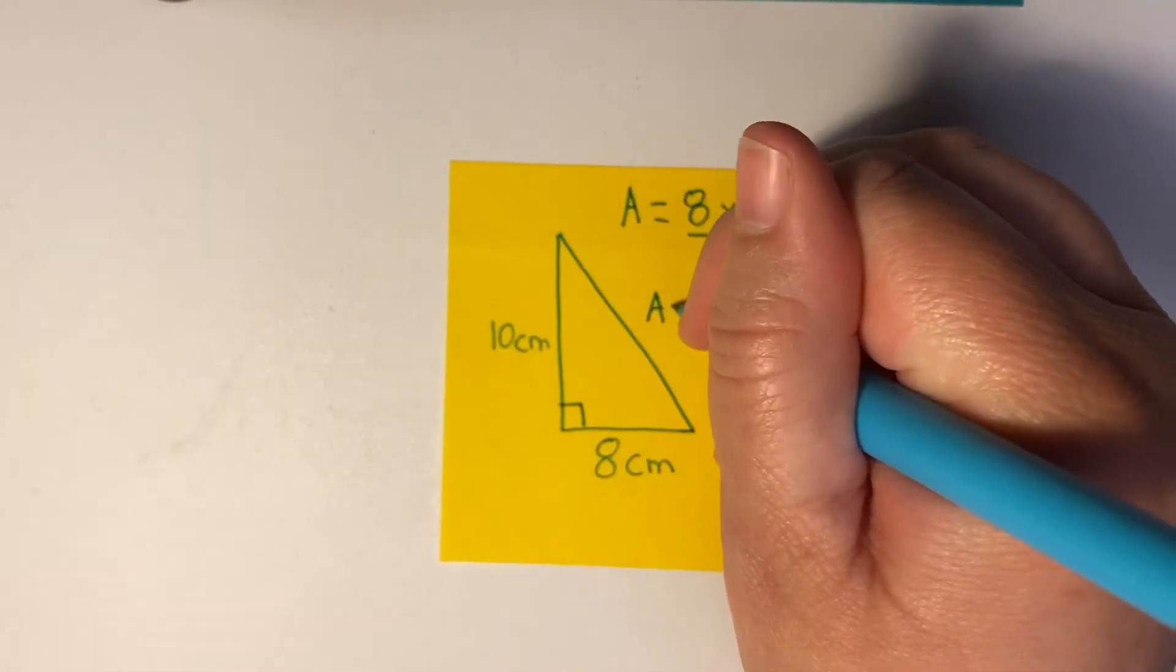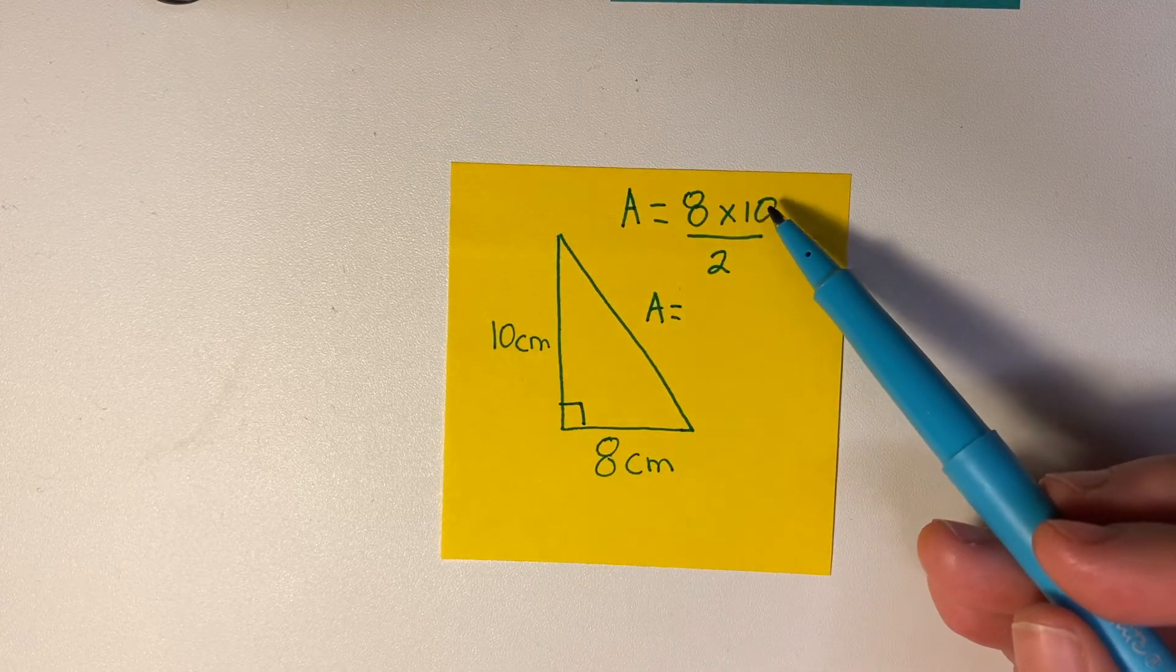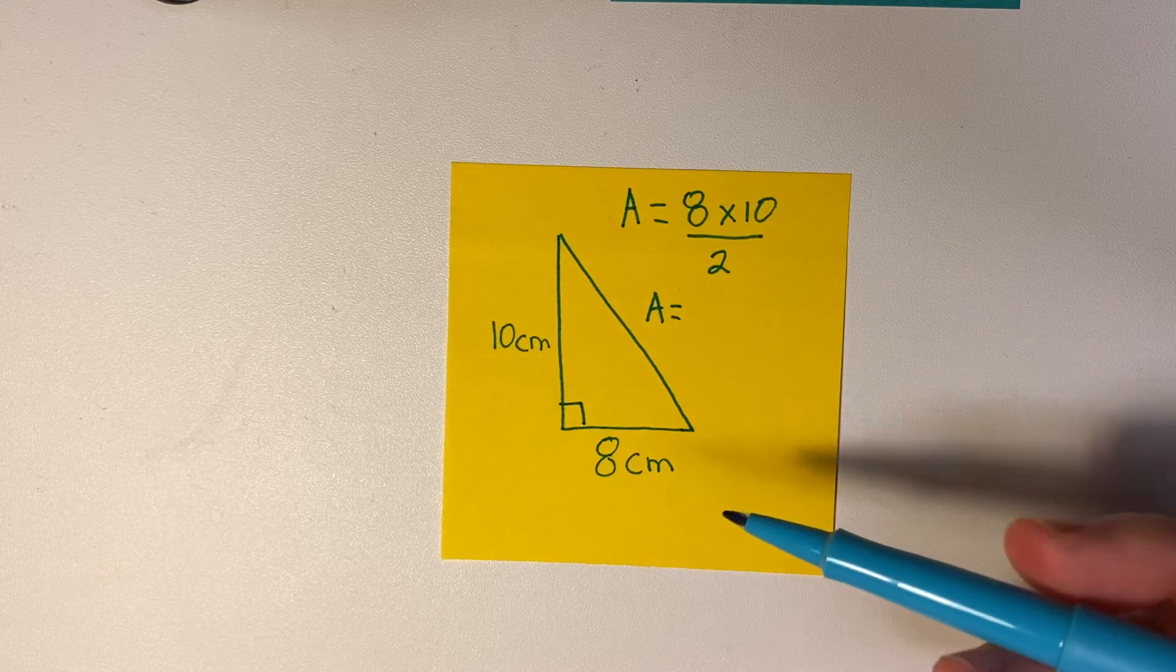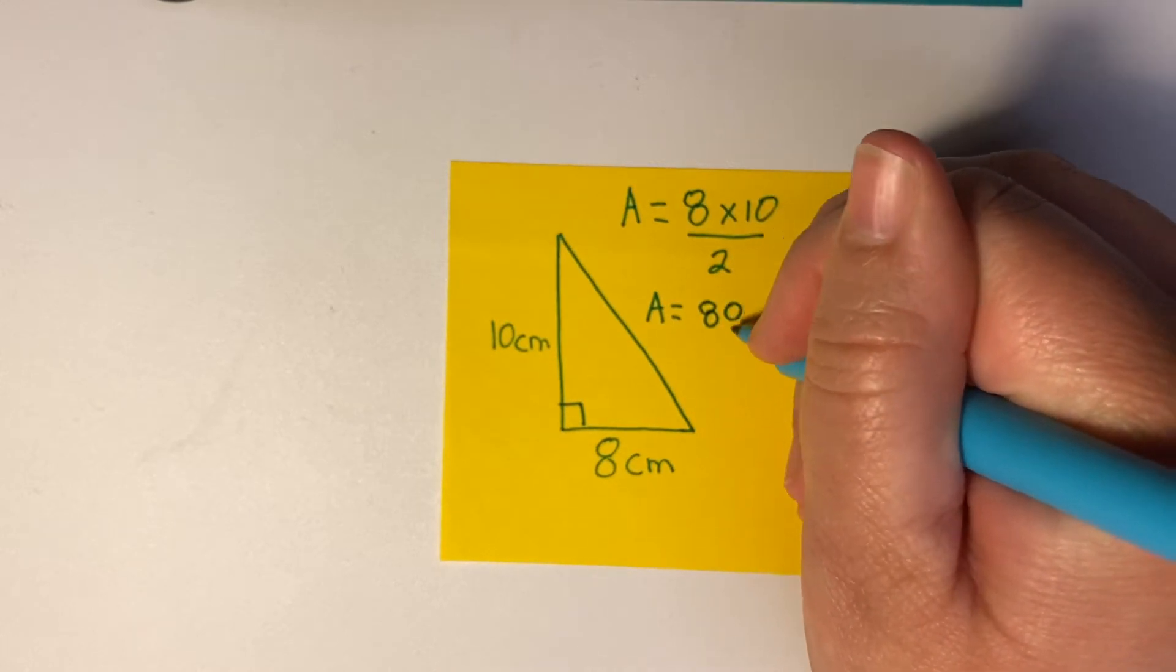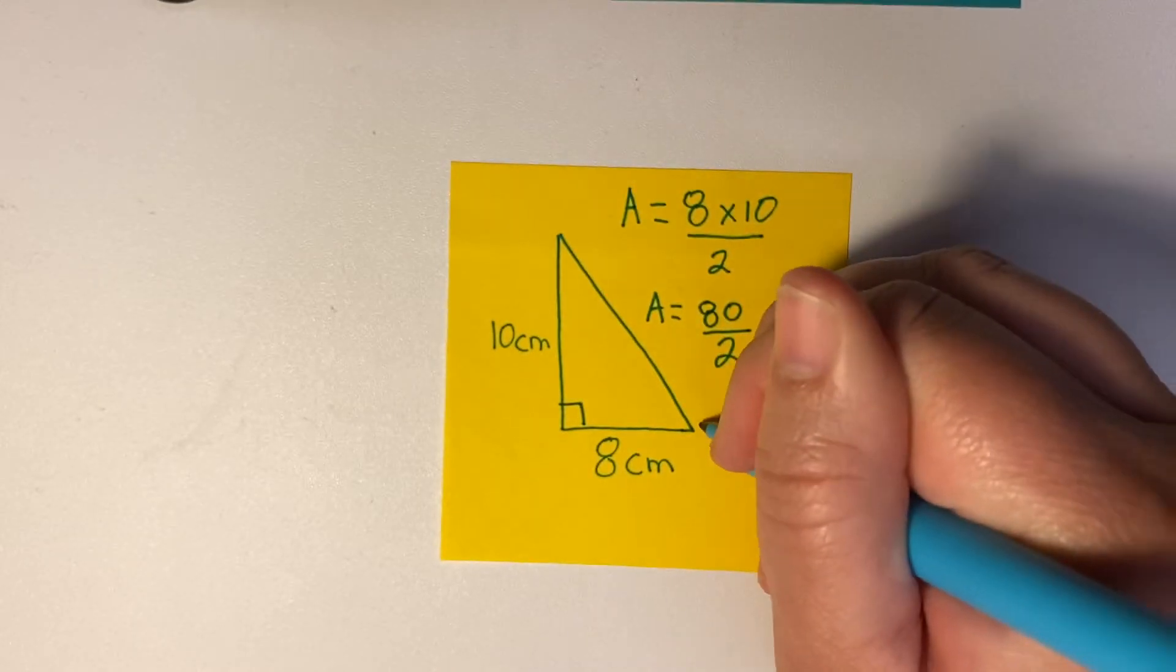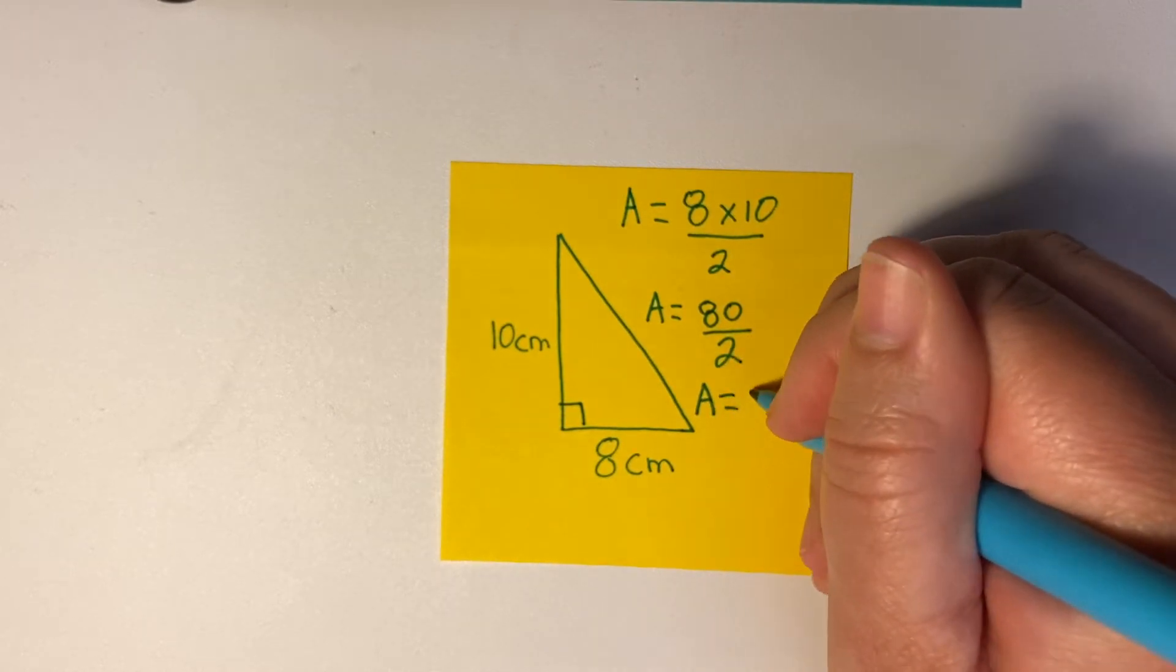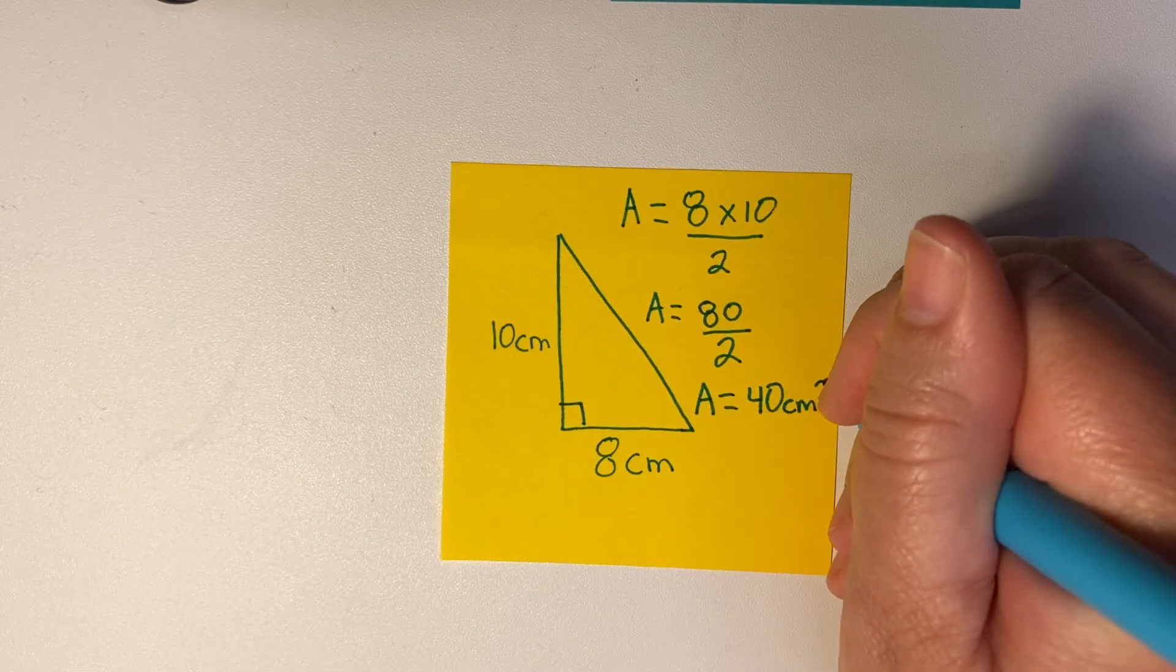You can do another step, you can probably do mental math with this. You could do 8 times 10 equals 80, 80 divided by 2 is 40. But if you want to write it down or your teacher wants you to write it down, you would do 8 times 10 is 80 divided by 2, so you would get the area is equal to 40, and this is centimeters squared.